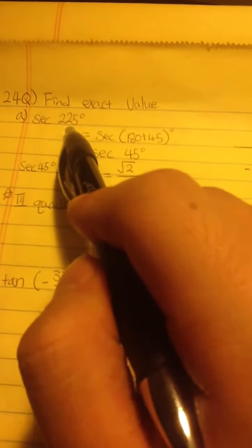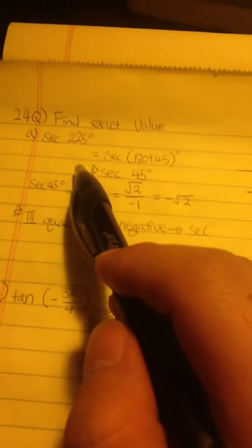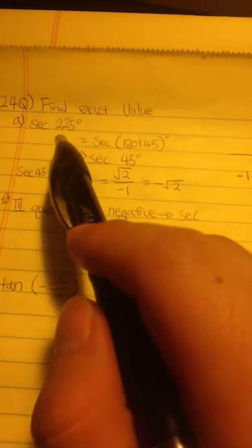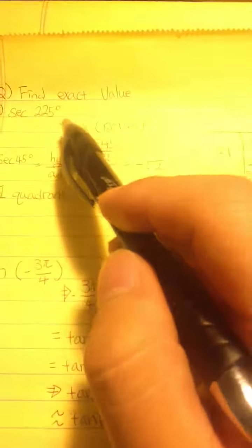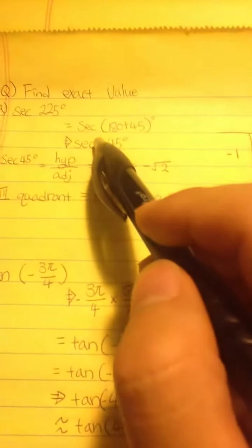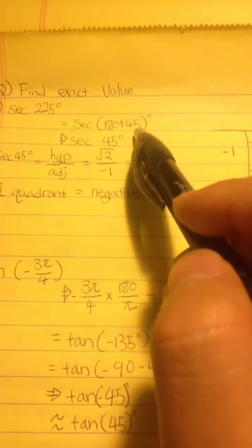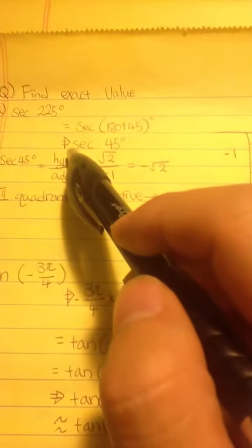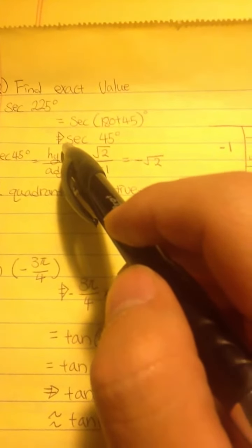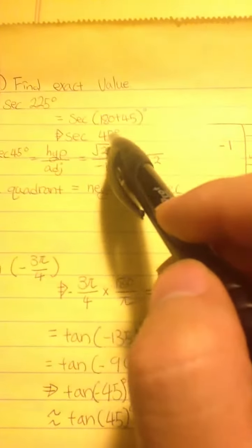Secant 225 degrees. In this kind of question, I first try to find the reference angle of the function. Secant 225 degrees equals secant 180 degrees plus 45 degrees, which the reference angle is secant 45 degrees.